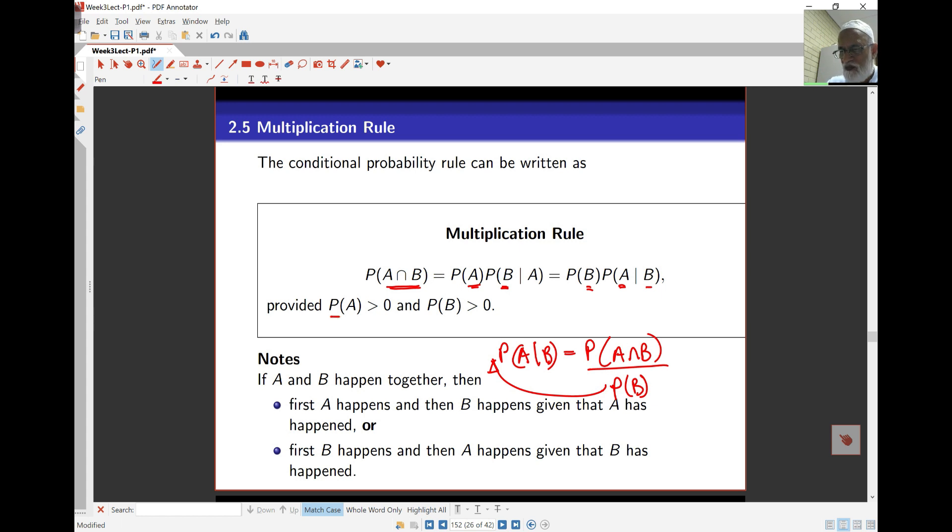The condition here, of course, is that probability of A and probability of B must all, each of them, be bigger than 0. The idea is, of course, I can't divide by 0 here otherwise. So that's how this works, and this is another very useful rule.